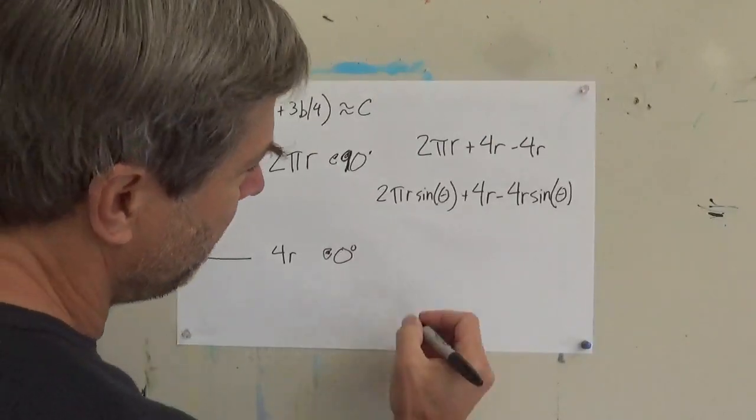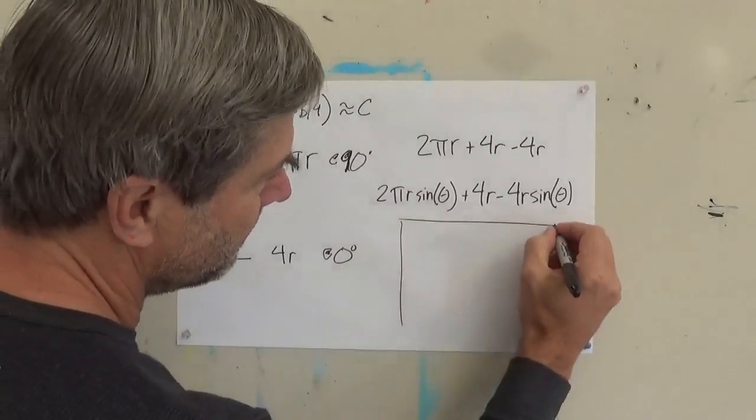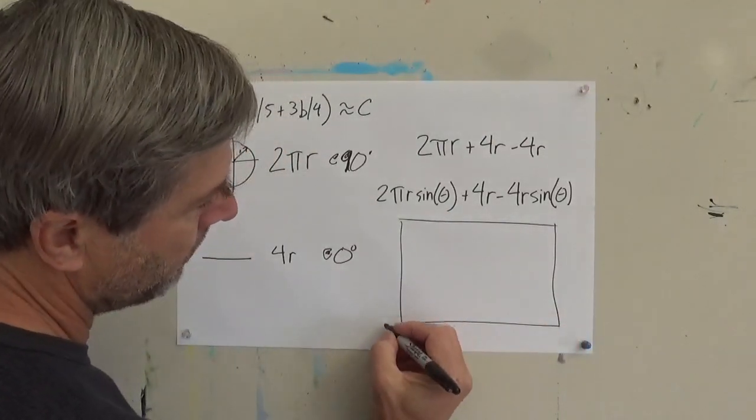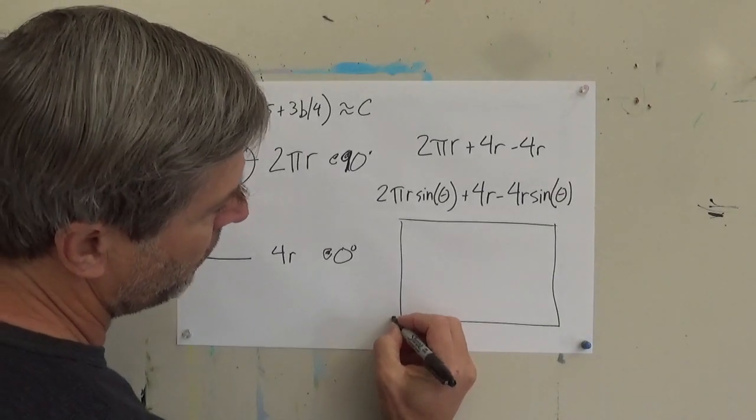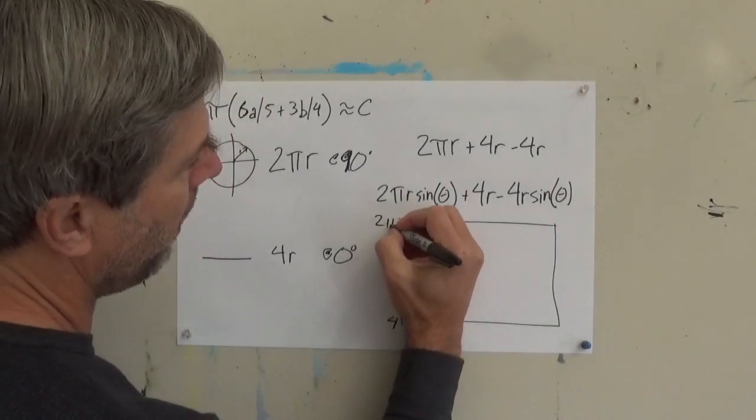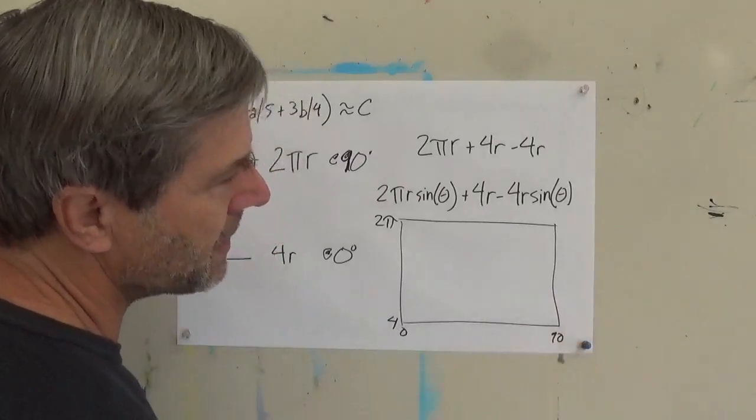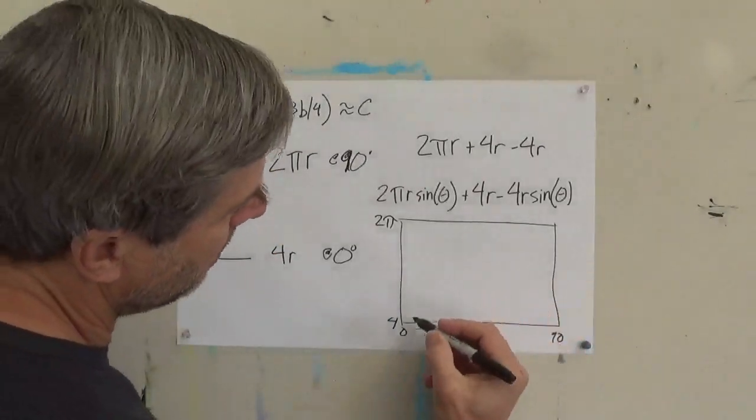And when I graph that out from 4 to 2 pi over 0 to 90 degrees, I get a curve